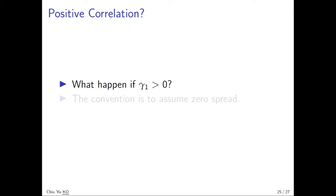Now you want to ask, we have C. The formula is defined when gamma one is positive, and the convention will make it zero.